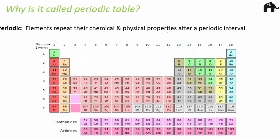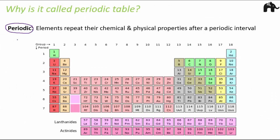Why is it called a periodic table? It is periodic because elements repeat their physical and chemical properties after a periodic interval. For example, lithium, and then after a periodic interval sodium, and again after a periodic interval potassium — they all have similar physical and chemical properties. Every eighth element has the same behavior. It is also called a table because the elements are arranged in a tabular form. Therefore, it is called the periodic table.